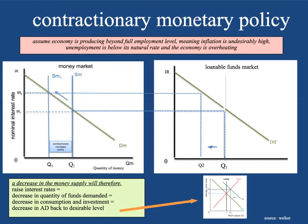So contractionary monetary policy — what is it assuming? Well, what it assumes is that the economy is producing beyond the full level of employment, meaning inflation is undesirably high. Unemployment is below its natural rate and the economy is, as economists love to say, overheating. It's going too fast, it's growing too much, things are too good — you've got to slow it down.